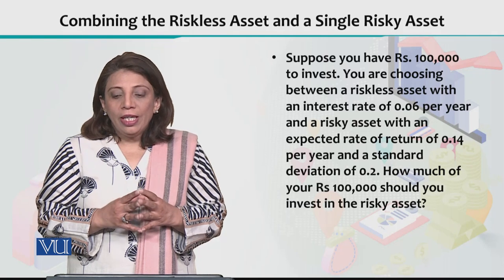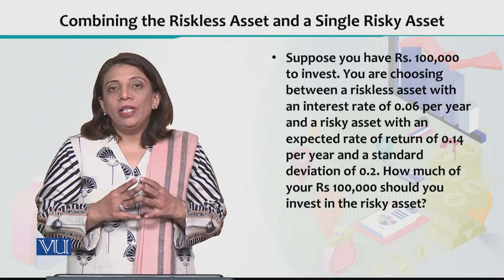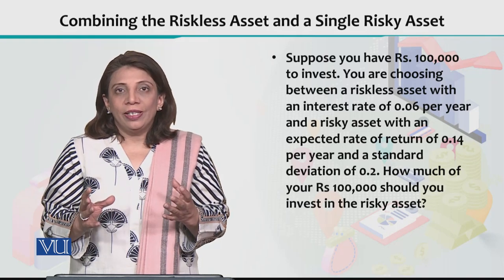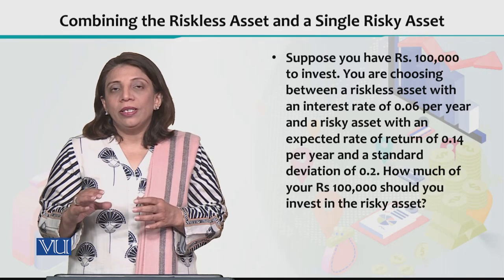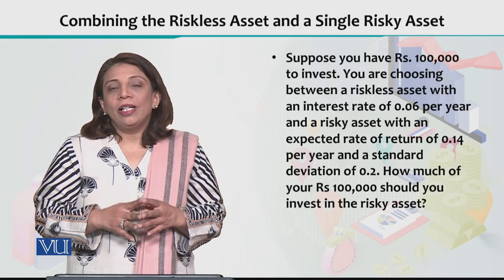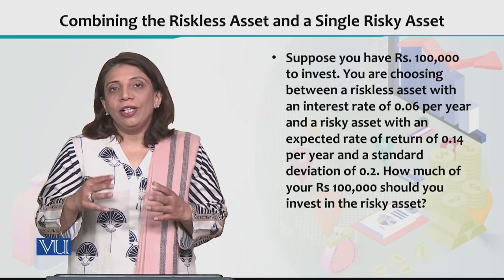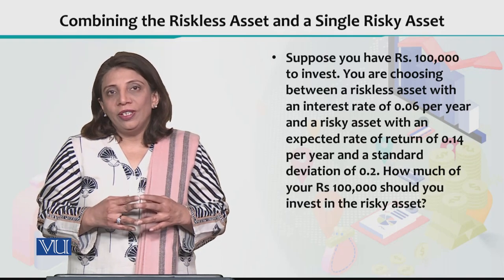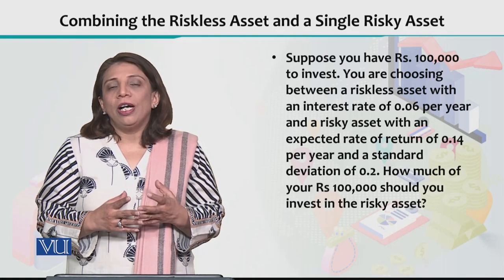Suppose you have 1,000,000 and you have a choice to invest in riskless assets or risky assets. It is always safer and better to invest in multiple assets which differ in risk levels, so that you can generate better expected returns. So we consider that there are choices: a risky asset and a riskless asset. The riskless asset is usually your T-bills.